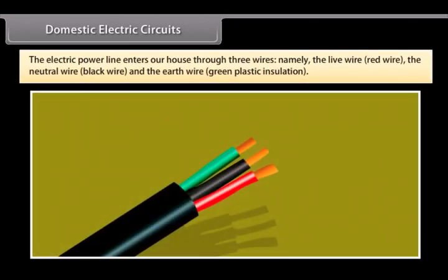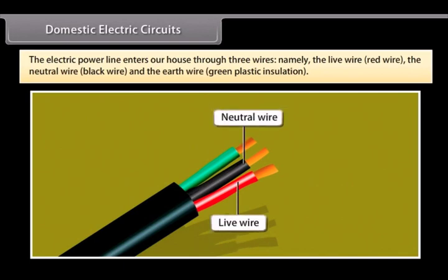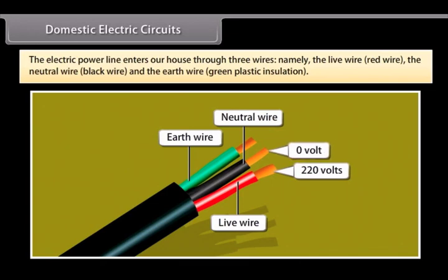The electric power line enters our house through three wires: the live wire (red wire), the neutral wire (black wire), and the earth wire (green plastic insulation). The live wire has a high potential of 220 volts and the neutral wire has zero potential. Thus the potential difference between the live wire and the neutral wire is 220 minus 0 which equals 220 volts.